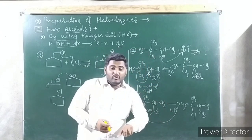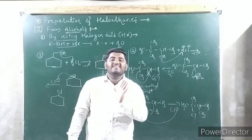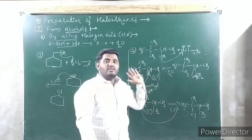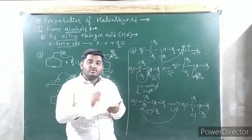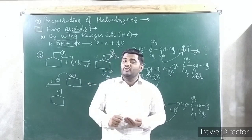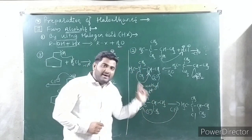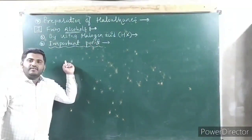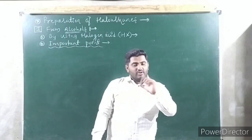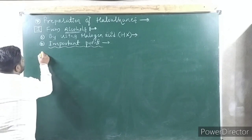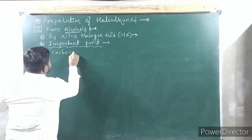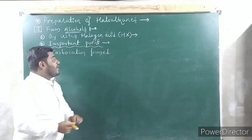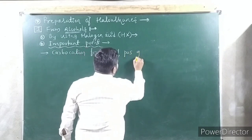So this is regarding the first part — from alcohols using halogen acid or hydrogen halide. Now you have to remember some important points during this reaction. First point: this reaction involves carbocation formation. Therefore, if possible, go for rearrangement.